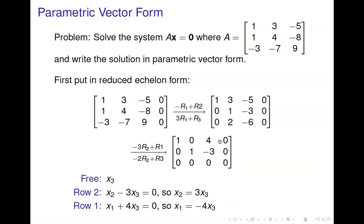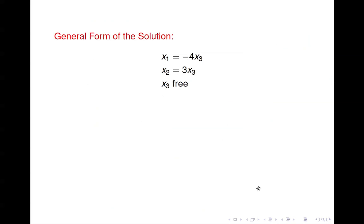Looking at this matrix, you can see that X1 and X2 have pivot positions in their columns, so those are basic variables. In the X3 column, there is no pivot position, so X3 is a free variable. That means we have an infinite number of solutions — this homogeneous system has non-trivial solutions. From the second row, X2 must equal 3 times X3, and X1 equals negative 4 times X3. We write the general form of the solution with X3 free and X1, X2 expressed in terms of the free variable.